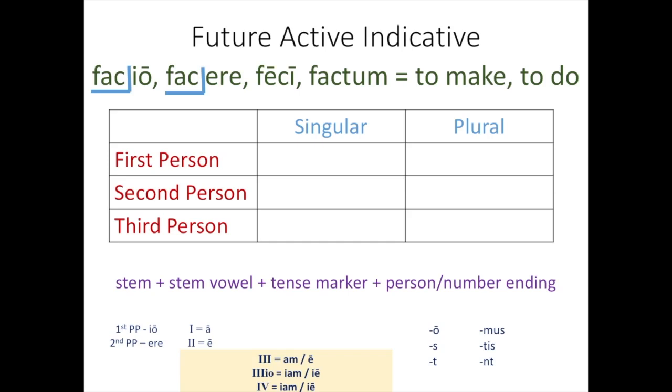So you start with your stem, F-A-C, and then our stem vowel and tense marker are combined. So the long E needs to be a part of it for all but first person singular. For first person singular, for third IO and fourth, it's I-A-M that has your person and number ending there as well.